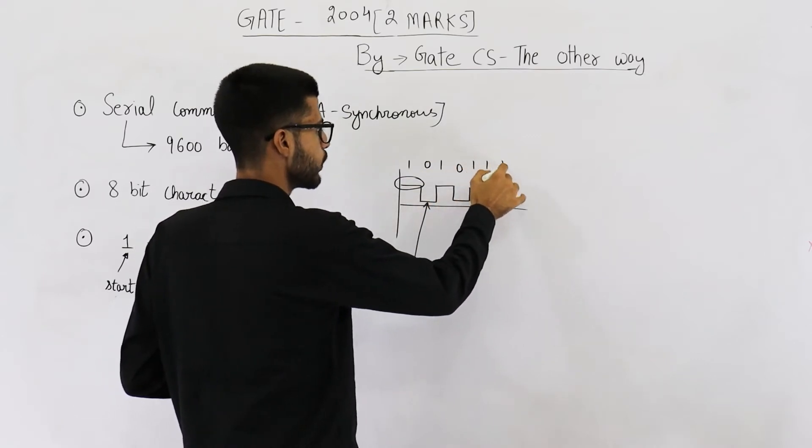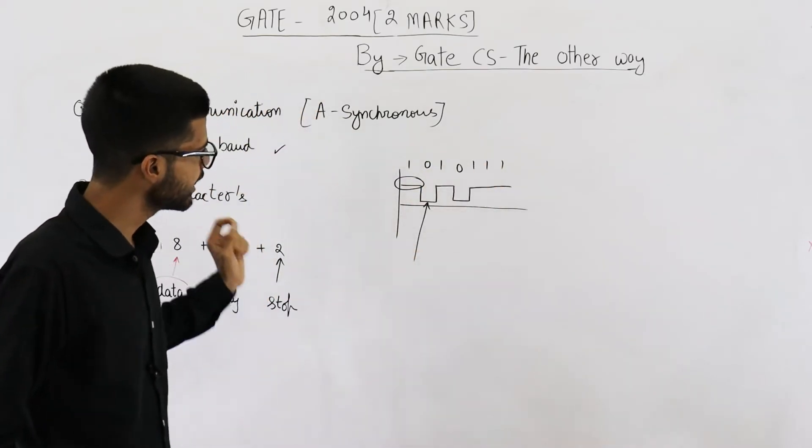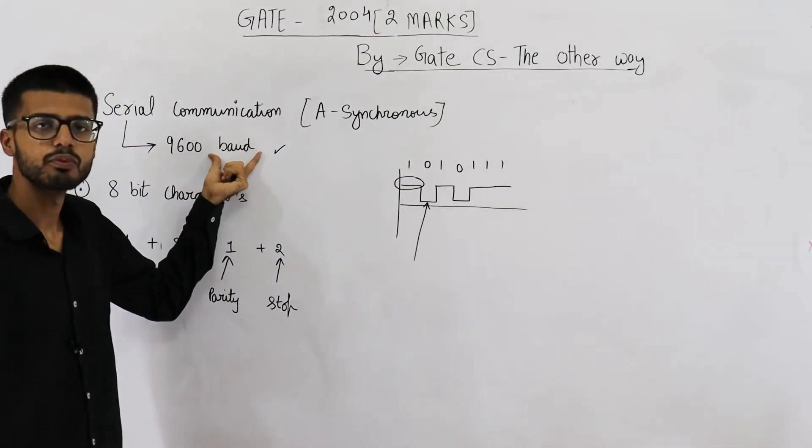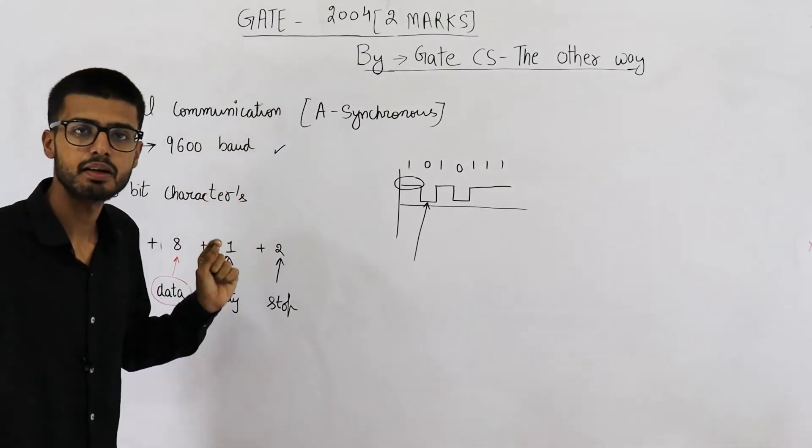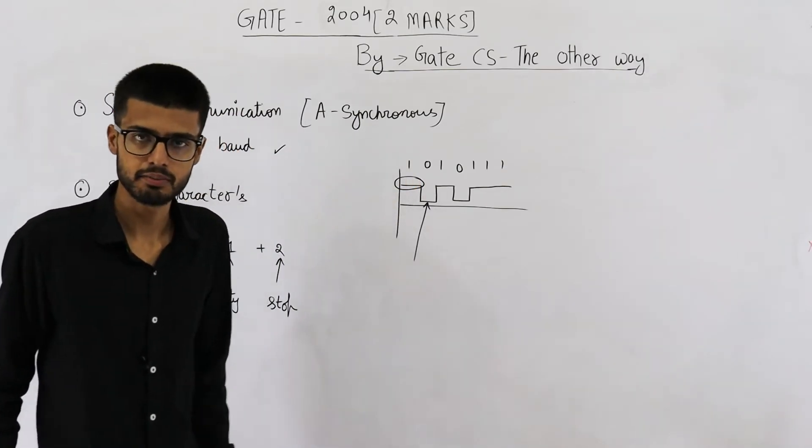one, zero, one, one, one, and so on. That means every second, we can send 9600 bits because we are sending 9600 symbols.